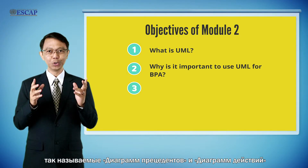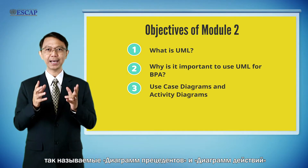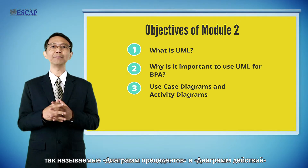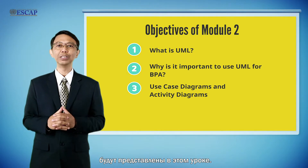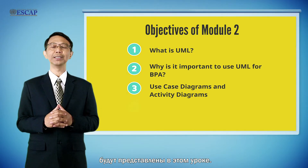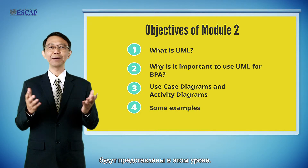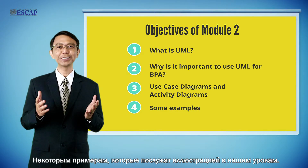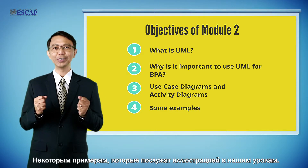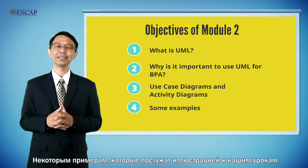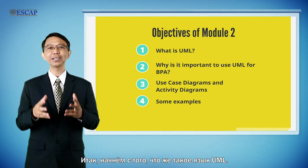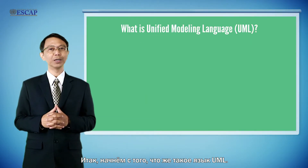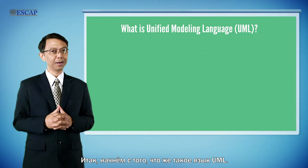Two types of UML diagrams — so-called use case diagrams and activity diagrams — will be introduced in this module. Some case examples will also be discussed to illustrate our lessons. So let us start by asking: what is UML?